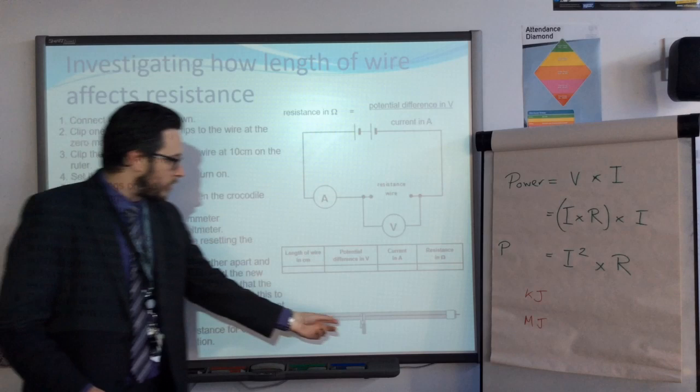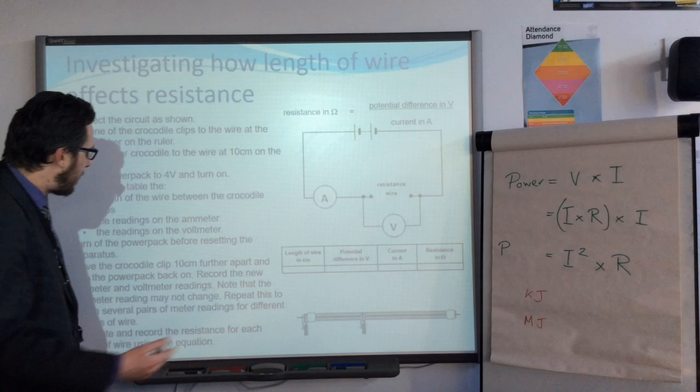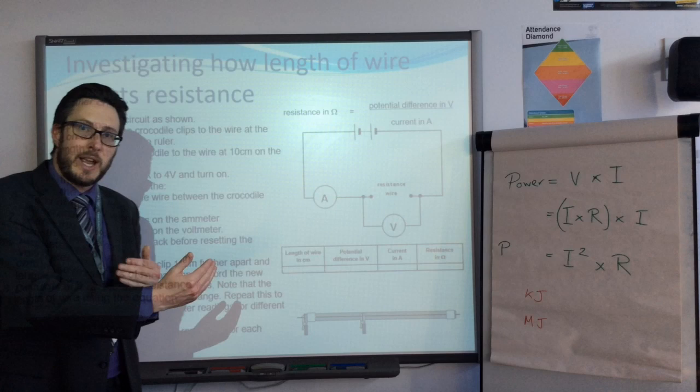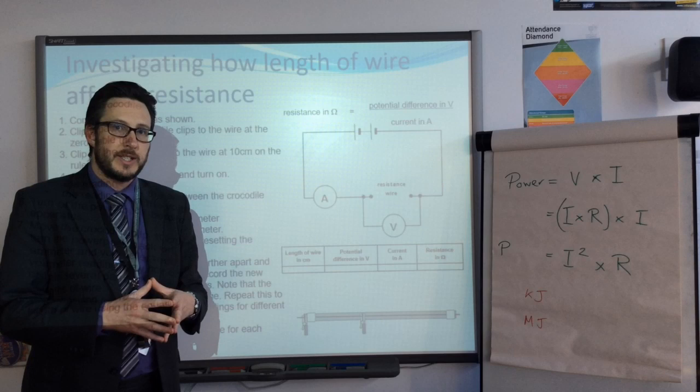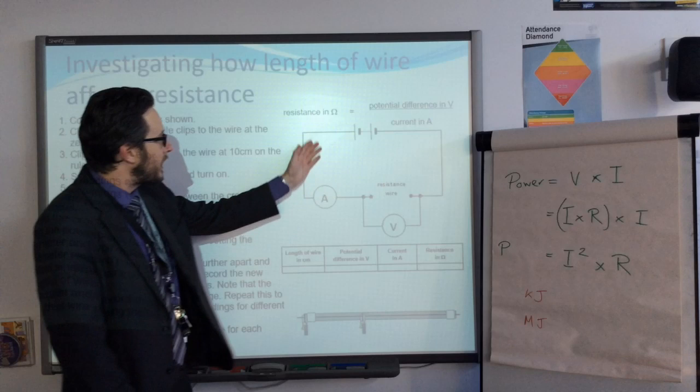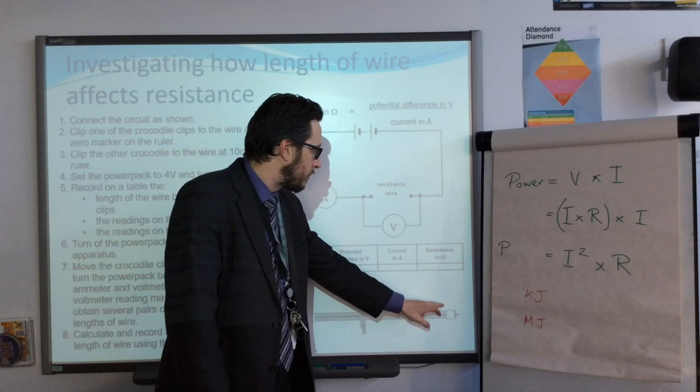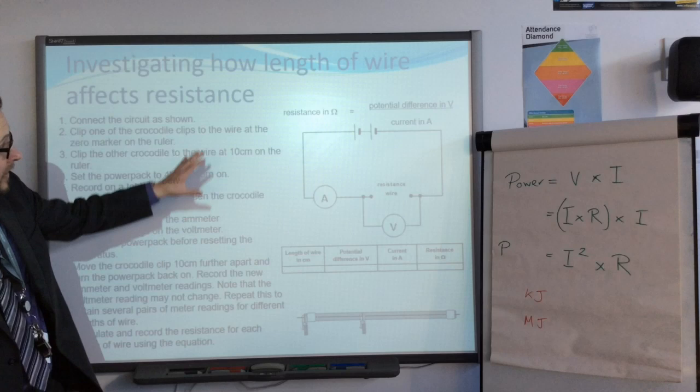You will then need to turn off the power pack. Undo this crocodile clip that's at 10cm and move it 10cm further away to 20cm, and then repeat the readings. Turn it on again, take your readings, and then turn it off. Do it again at 30cm. You should repeat this experiment at least twice to ensure you've got consistent readings, and do it all the way up to about 100cm. Once you've got that, if you've done this correctly, you should see a pattern where if the length of the wire increases the resistance will also increase. That should be the pattern that we observe.